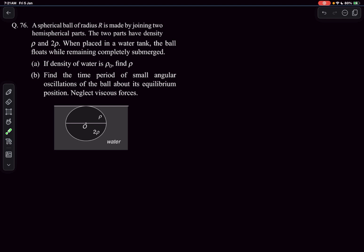Let's begin by reading the problem statement. We have a spherical ball of radius R made by joining two hemispherical parts. The two parts have densities rho and 2 rho. When placed in a water tank, the ball floats while remaining completely submerged.